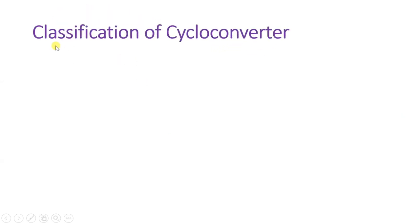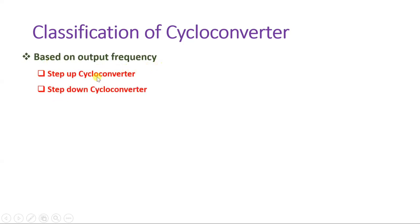Now let us see the classifications of cycloconverter. One classification is based on operation frequency: if we increase output frequency with respect to input frequency, that is a step-up cycloconverter; if we decrease output frequency with respect to input frequency, that is a step-down cycloconverter.